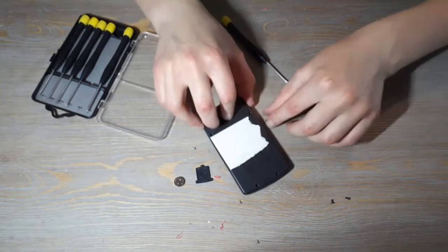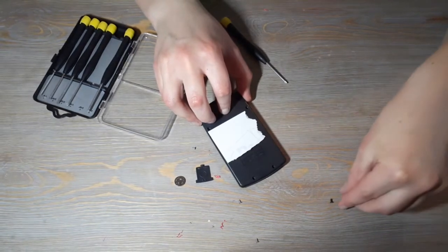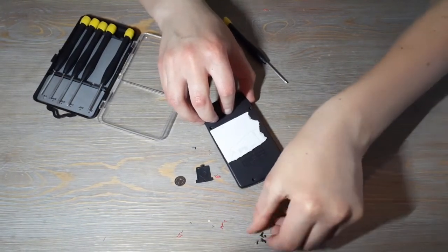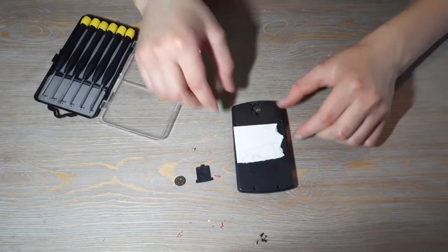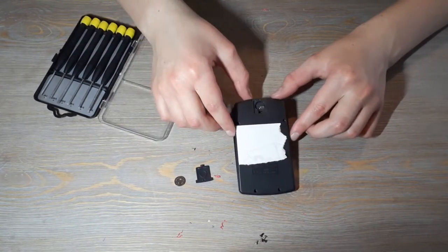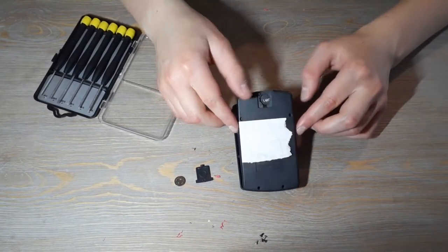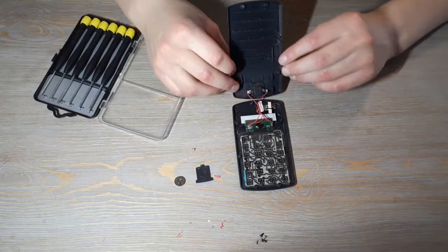Alright, so now that we have all five screws out, or however many screws you guys had, you go ahead and lay the calculator face down and lift up the back side and bring it forward like this.